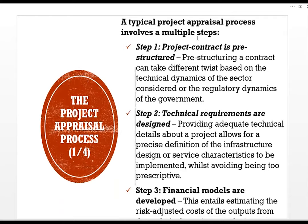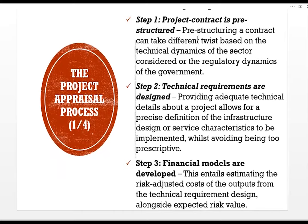Step one: the project contract is restructured. Restructuring a contract can take different forms based on the technical dynamics of the sector considered or the regulatory dynamics of the government. Step two: technical requirements are designed — providing adequate technical details about a project allows for a precise definition of the infrastructure design or service characteristics to be implemented, whilst avoiding being too prescriptive. Step three: financial models are developed, entailing estimating the risk-adjusted costs of the outputs from the technical requirement design, alongside expected risk value.